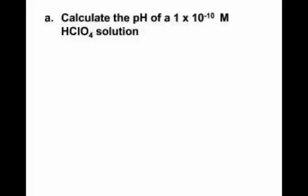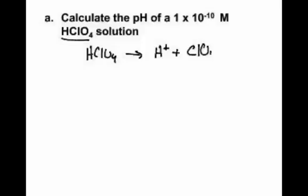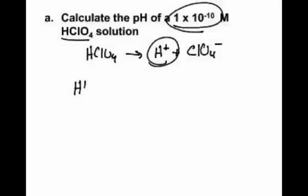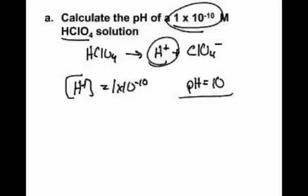Conversely, we can also do perchloric acid — HClO4 — which also completely dissociates into H⁺ and ClO4⁻. The hydrogen ion concentration, since it completely dissociates, is 1×10⁻¹⁰. So you would say pH equals 10. But that's kind of weird — you cannot have a pH greater than 7 if you have an acidic solution. This is not true!